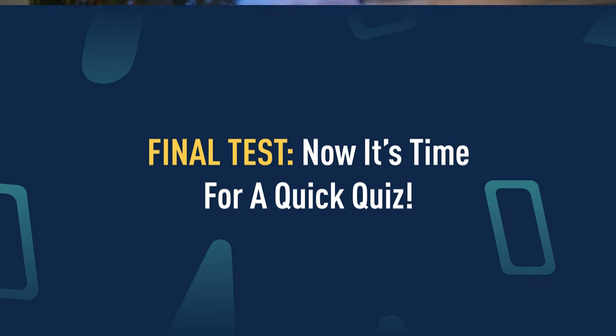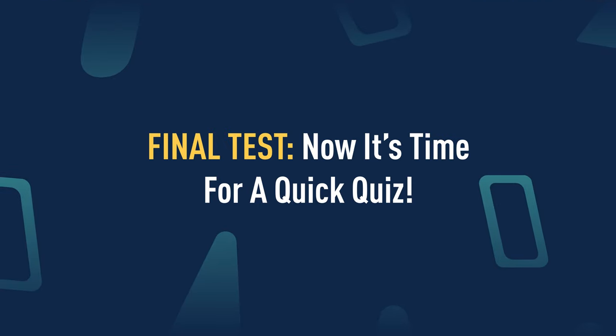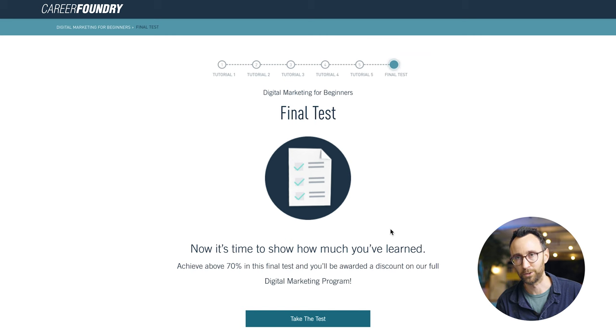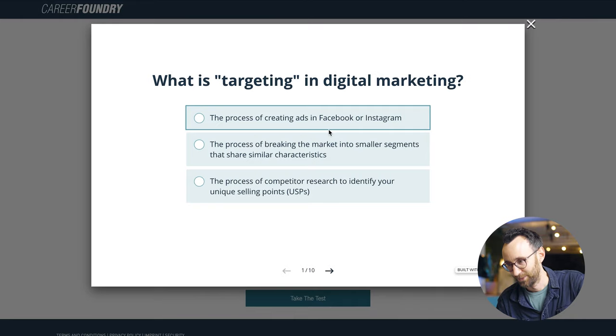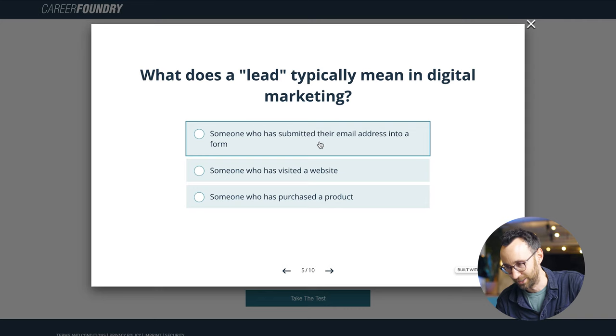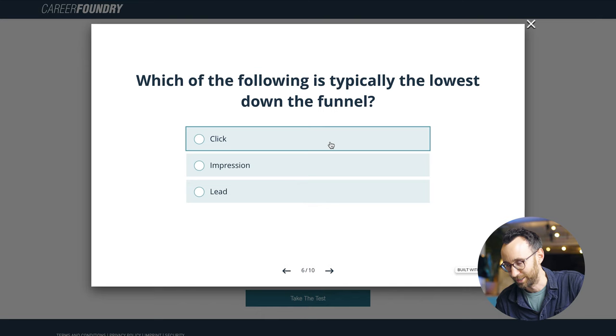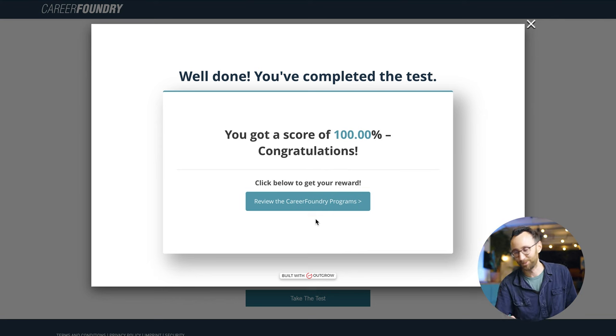Once you've done that, you can move on to the final test, where you can test the knowledge you've acquired over the last five tutorials. The questions include: What is targeting in digital marketing? What is SEO's first step in the funnel? What does a lead typically mean? Which of the following is typically the lowest down the funnel? What are the four P's of marketing? What is an efficiency KPI? And finally, what does CTR stand for? I got 100% — fantastic!